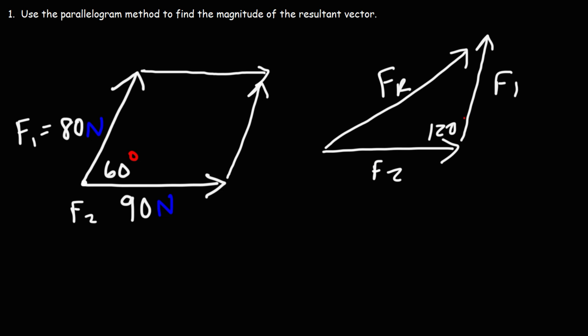Now this angle is very important for us to get the resultant vector, because now we could use something called the law of cosines.